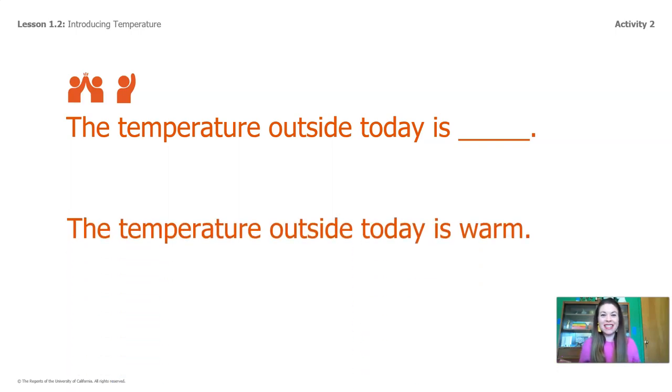The temperature outside today is warm. I went outside. I was wearing just this light sweater. I didn't feel cold. I didn't feel hot. I would say it was warm. The sun was shining down. That's what the weather was like here in Seattle, Washington today.